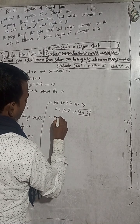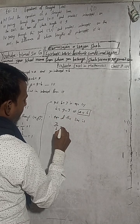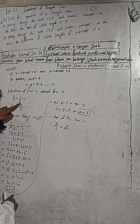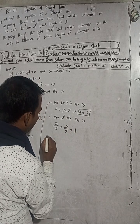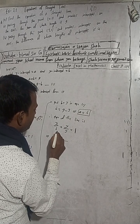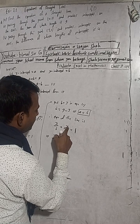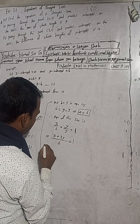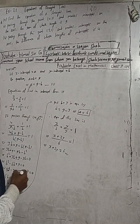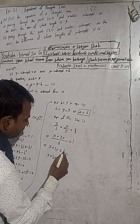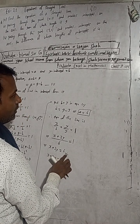Therefore the equation of the line is x/a + y/b = 1, substituting a = 6 and b = 3: x/6 + y/3 = 1. Taking LCM as 6: x + 2y = 6. This is our required answer. You can also write it as x + 2y - 6 = 0. Both forms are acceptable.